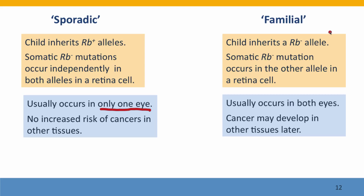In familial cancer, it usually occurs in both eyes. That's because the odds of an RB mutation happening in one allele in at least one retinal cell are actually very, very high. So usually people with familial retinoblastoma develop retinoblastoma tumors in both eyes, often more than one tumor in a single eye. People with sporadic retinoblastoma usually don't have any increased risk in other tissues because their other tissues are all genetically normal.